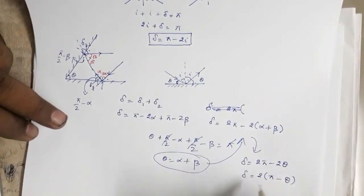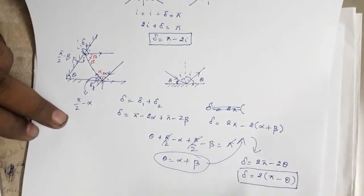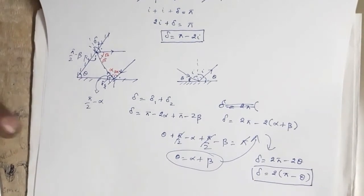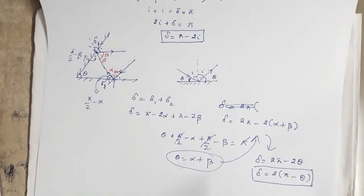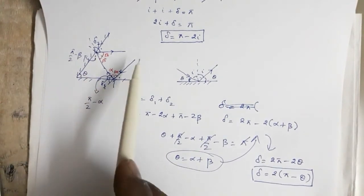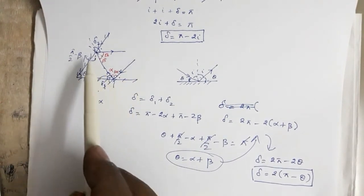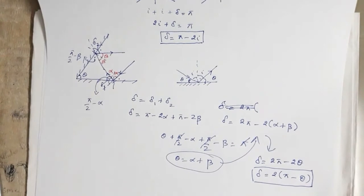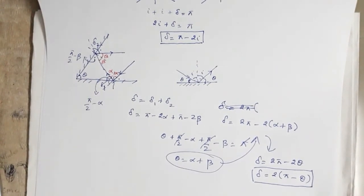So, δ = 2π − 2θ is the expression for deviation. It is quite interesting that the deviation depends on the angle between the two mirrors and is independent of the angle of incidence at the two surfaces. This is the case when the ray gets deviated by two mirrors inclined at angle theta.